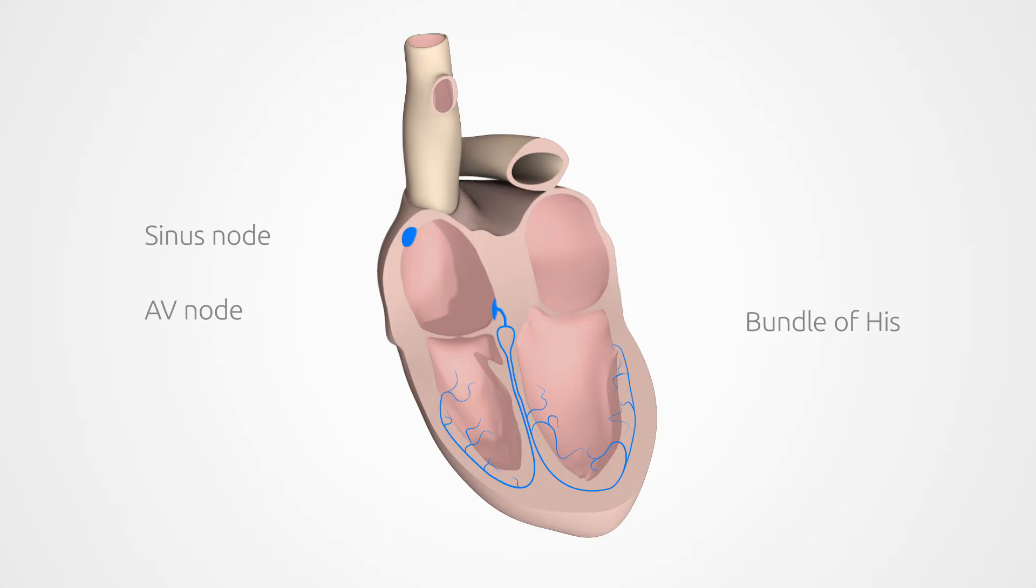This splits into two branches, which lead towards the lower end of the heart and eventually branch off into thin fibers that enter the ventricles.